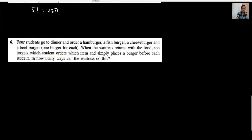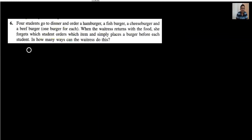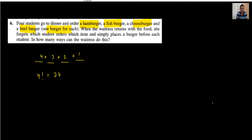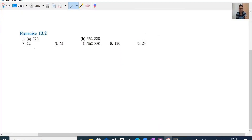Question number 6: 4 students go to dinner and order hamburger, fish burger, cheeseburger, and beef burger — one burger for each student. The same condition applies: 4 × 3 × 2 × 1, or 4 factorial, equals 24.